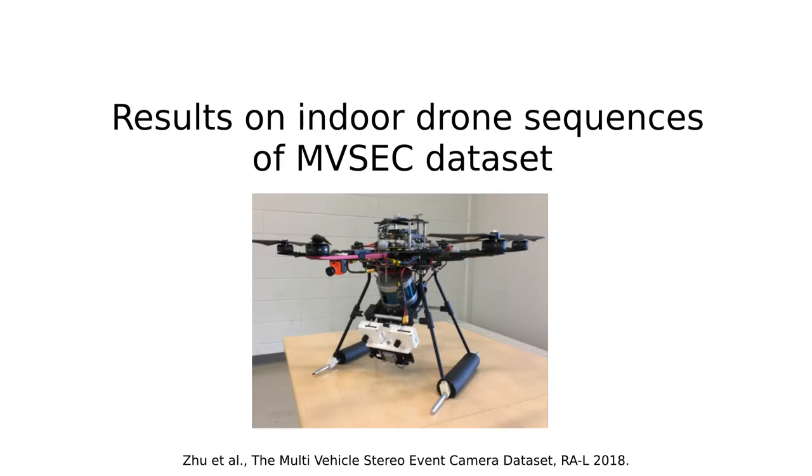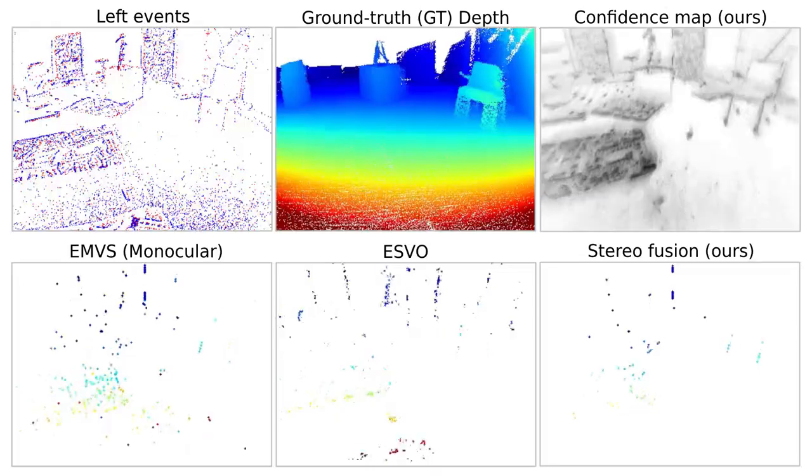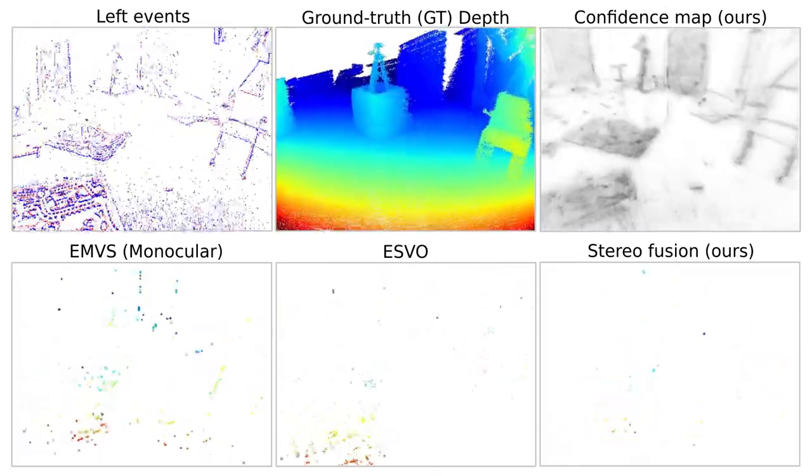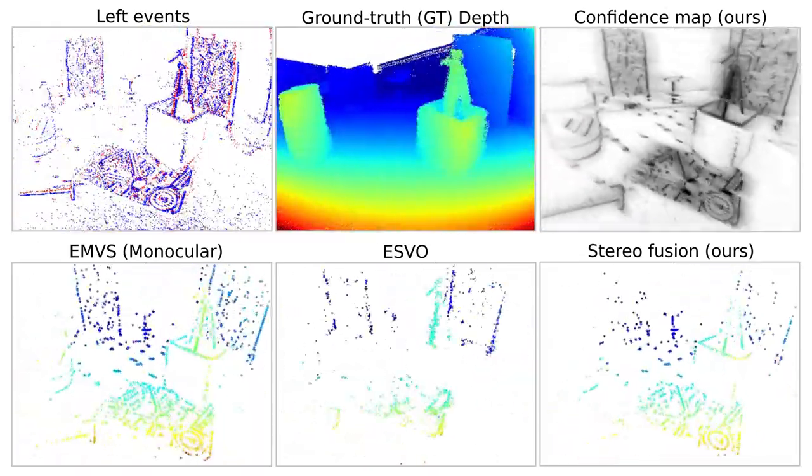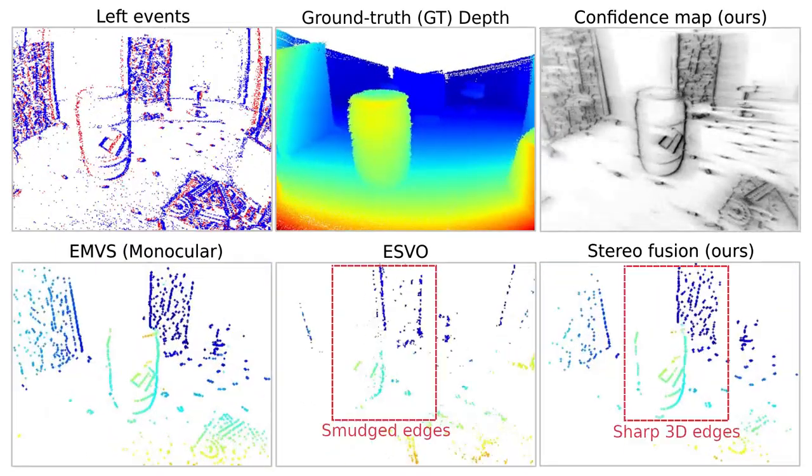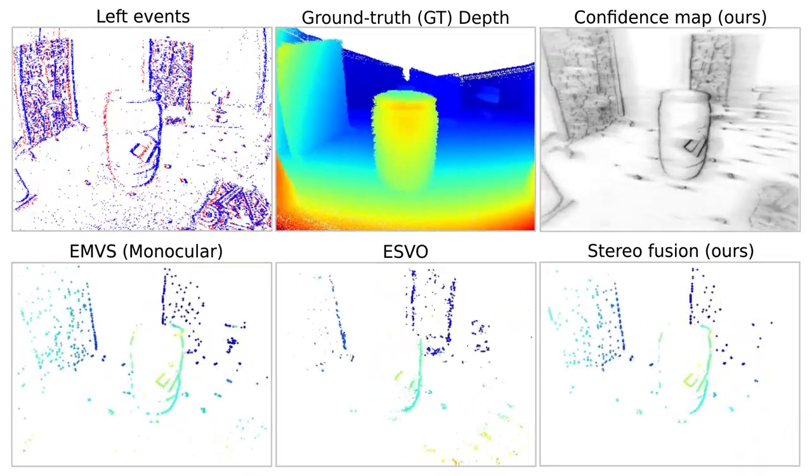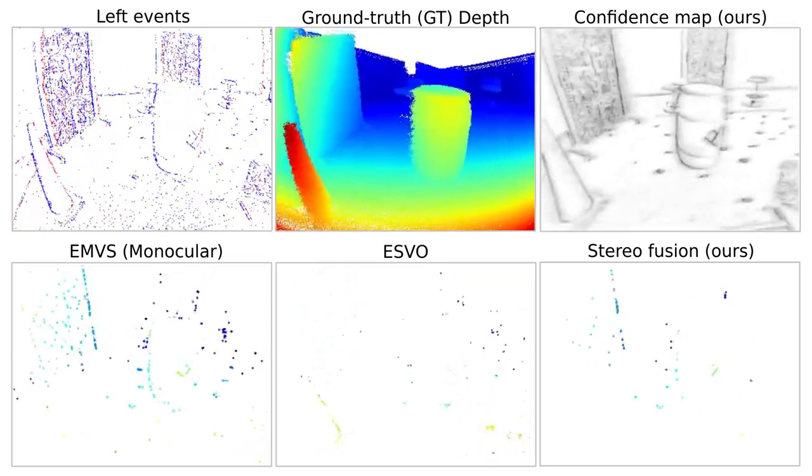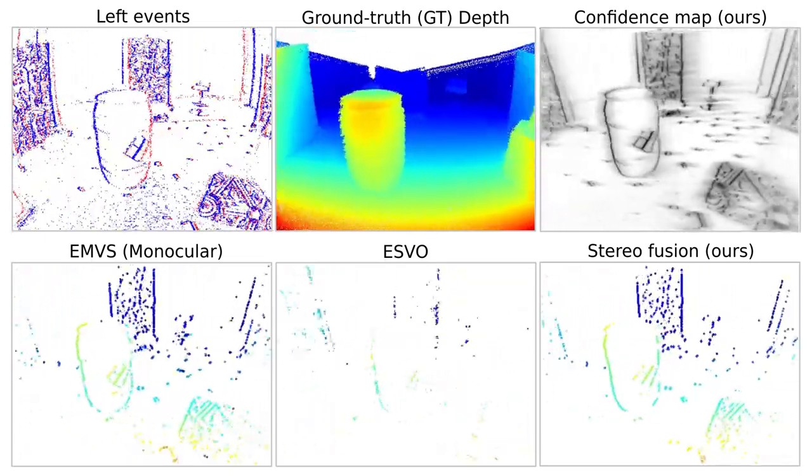We provide results on indoor sequences from the MVSIC dataset acquired using a drone. We compare our results with state-of-the-art monocular method EMVS and stereo method ESVO. Our method produces sharper 3D edges and denser depth maps than ESVO.